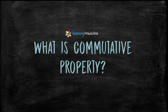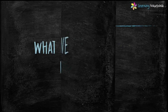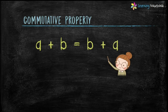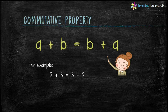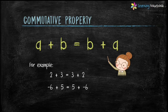Let's start and first see what is commutative property. Students, we have learnt commutative property by learning whole numbers in previous classes. If A and B are two whole numbers, then A plus B equals to B plus A. This is called commutative property. For example, 2 plus 3 equals to 3 plus 2, and minus 6 plus 5 equals to 5 plus minus 6. Now let's see commutative property of addition, subtraction, multiplication and division for rational numbers.